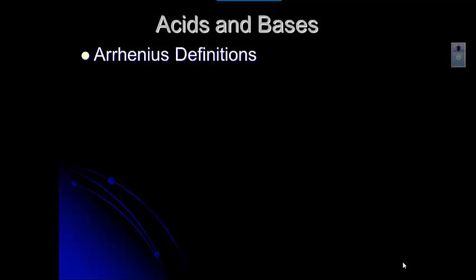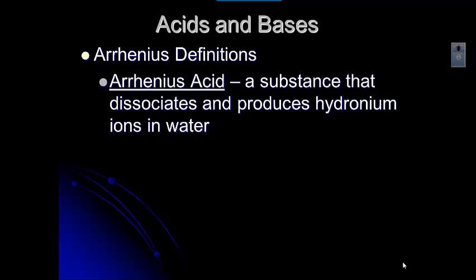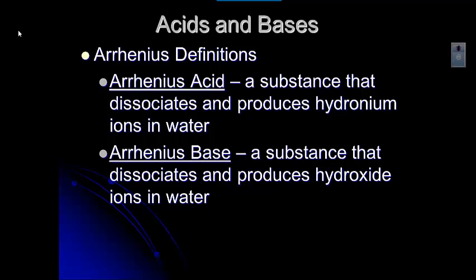Now there are two sets of definitions for acids and bases that we need to talk about. There's the Arrhenius definition, which is the oldest. An Arrhenius acid is a substance that dissociates and produces hydronium ions in water — hydrochloric acid is an example. An Arrhenius base is a substance that dissociates and produces hydroxide ions in water — sodium hydroxide is an example.